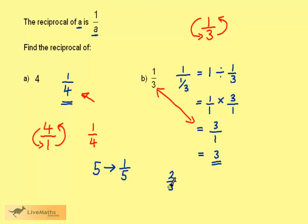If we look at 2 thirds, then the reciprocal of this would be 3 over 2, turning the fraction upside down, and 3 over 2 is 1 and a half as a mixed number.